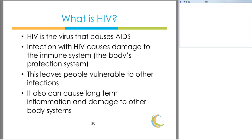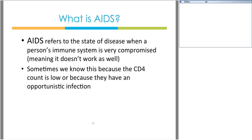So what is HIV? HIV is the virus that causes AIDS. Infection with this virus causes damage to the immune system — the body's protection system — leaving people highly vulnerable to other infections that might not cause illness in healthy patients. It can also cause long-term inflammation and damage to other body systems. AIDS refers to the state of disease when a person's immune system is very compromised, often after long-standing infection with HIV, known when the CD4 count is low or when an opportunistic infection occurs.